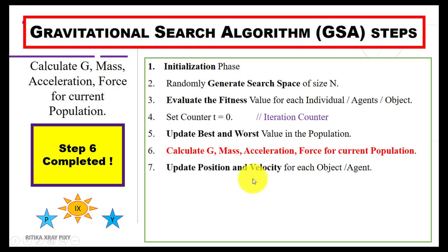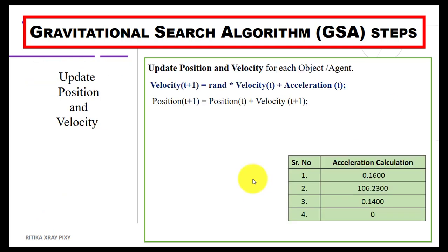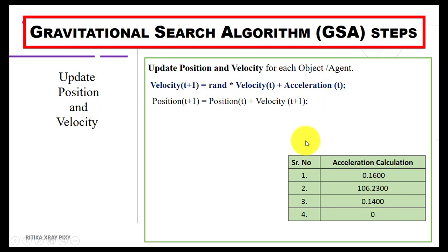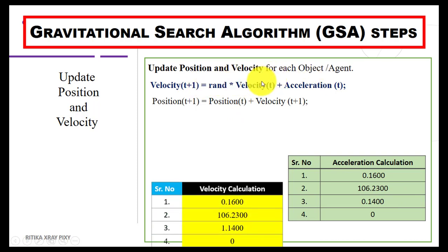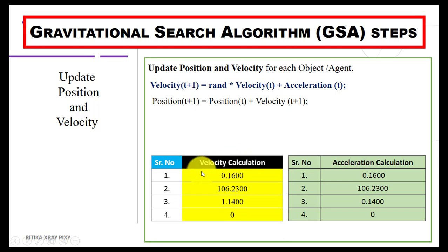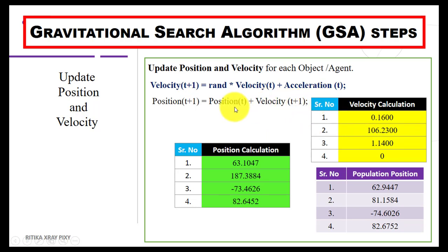Next step is to update position and velocity for each search agent. Using the velocity equation, we compute the new velocity, then add this velocity to the initial position. Initially, the velocity for each search agent is 0. There is a random value between 0 and 1 and the acceleration we recently computed. Putting all values into the equation we get the velocity for each search agent. Then we compute the new position by adding velocity to the initial position of each search agent, obtaining the new position for the first, second, third, and fourth agents.